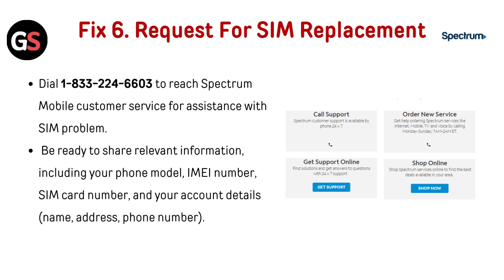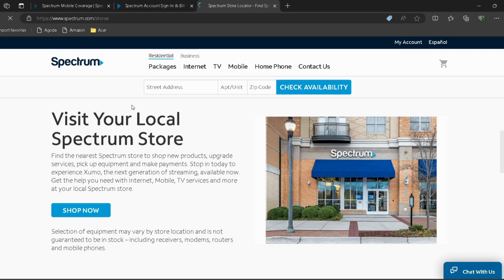Fix 6: Request a SIM replacement. Dial 833-224-6603 to reach Spectrum Mobile Customer Service for assistance with SIM problems. Be ready to share relevant information including your phone model, IMEI number, SIM card number, and account details like name, address, or phone number. You can also visit a nearby Spectrum retail store for in-person assistance with SIM replacement or device issues.